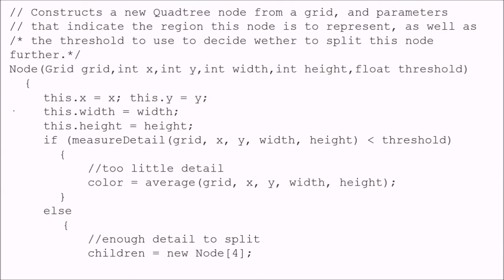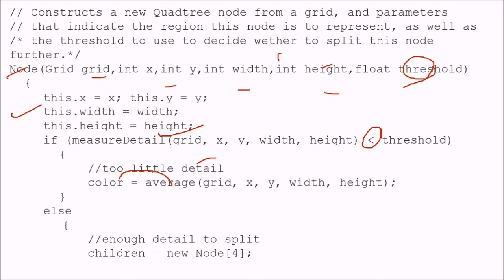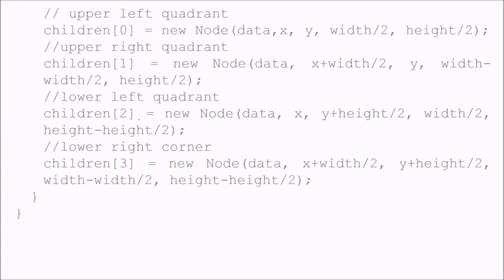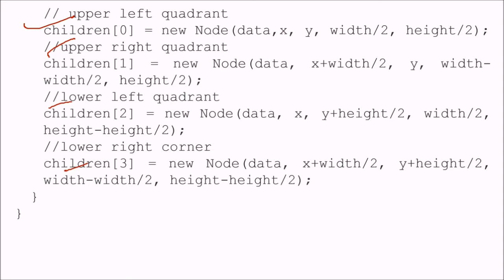To construct a new quad tree node from a grid, we pass parameters indicating the region this node represents and the threshold to decide whether to split. The node takes x, y, width, height, and the threshold. We measure the detail and compare it with the threshold. If the detail is small, the average color is stored. If there is enough detail to split, we create four children — children[0], [1], [2], [3] — one for each quadrant.